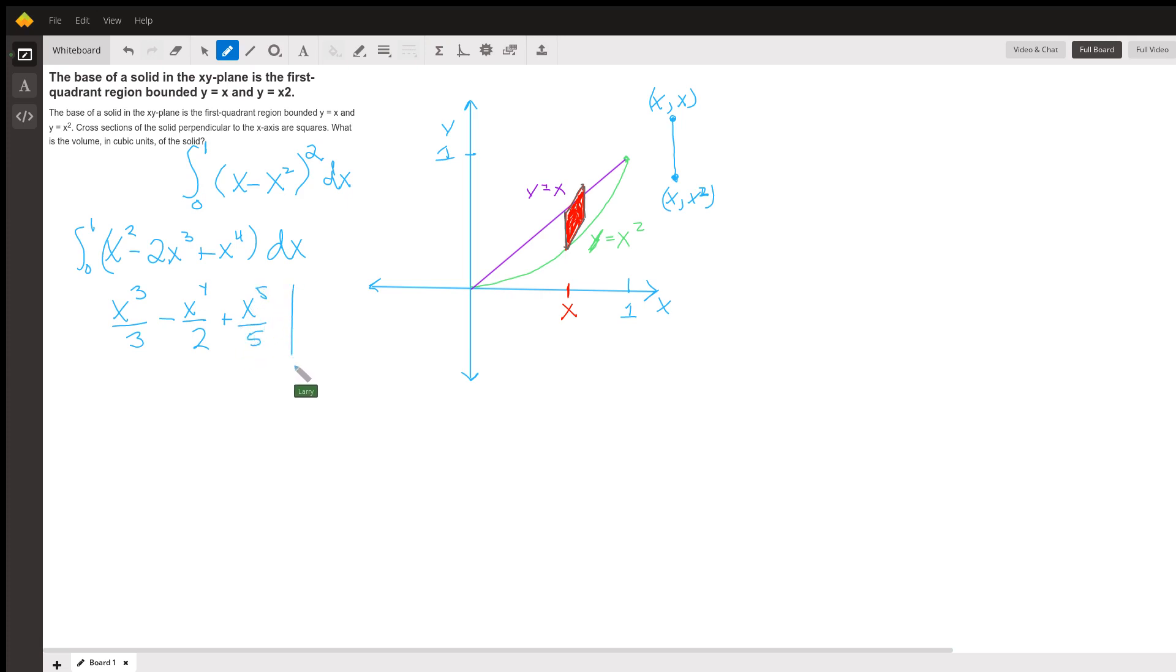We're going to evaluate that from zero to one. Make sure I didn't make a mistake here. So x cubed over 3, negative 2x to the fourth over 4, which is negative x to the fourth over 2. x to the 5 over 5. OK, good.